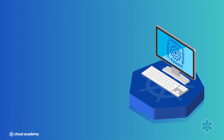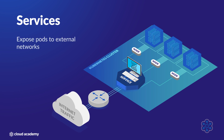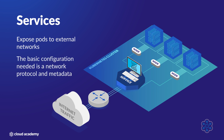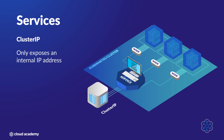Let's move on and talk about services. Services are very important — they are Kubernetes' way of exposing pods to external networks, including the public internet. If we want to make our application reachable from a browser, we're going to need a service to set up the IP address and DNS name. The basic configuration needed is a network protocol such as TCP, as well as ports and some metadata such as a service name. There are a few different types of services. Cluster IP services only expose an internal IP address, suitable for apps that don't need to be accessed from the public internet.